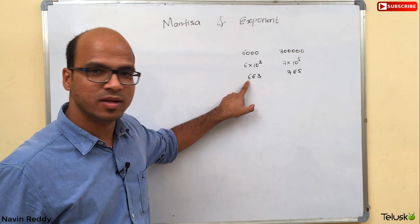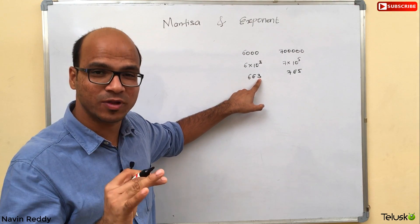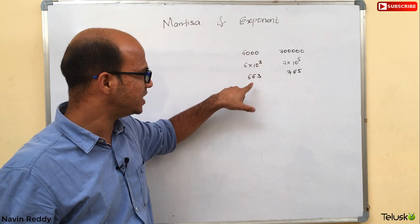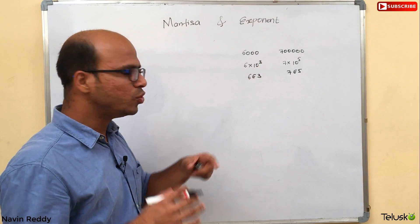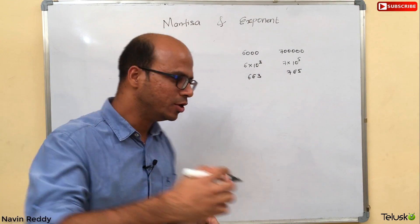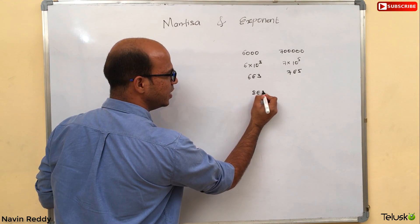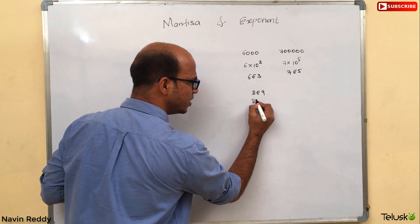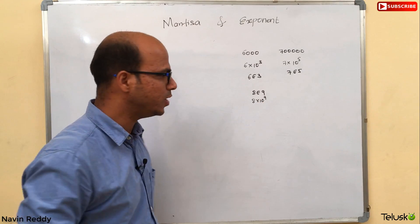So 6 is your Mantissa and 3 is your Exponent. When you say 6 into 10 raised to 3, which is 6E3, whenever you see E you can replace that with '10 raised to'. So if I say 8E9, it simply means 8 into 10 raised to 9.